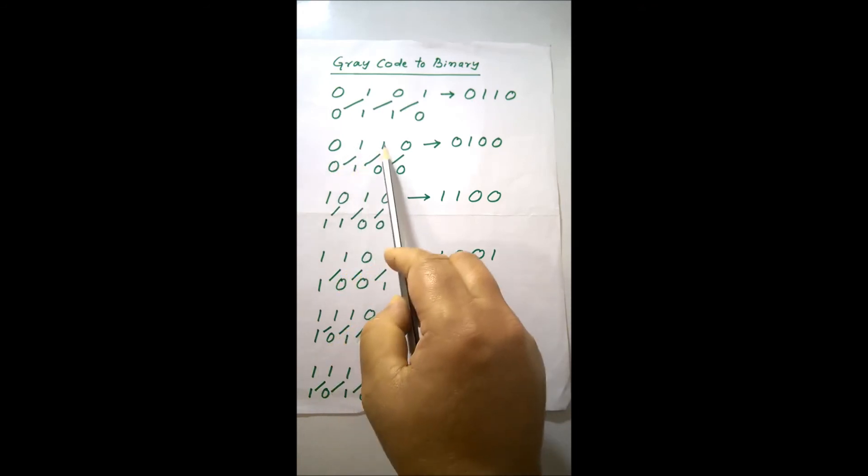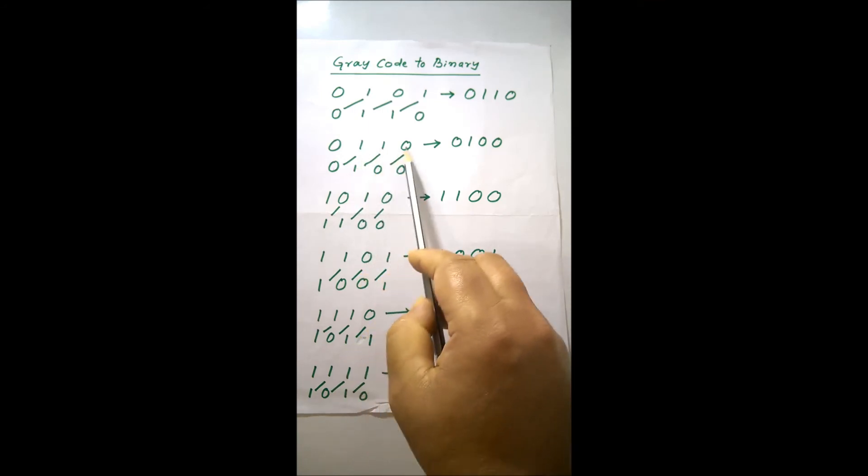Then this 1 will be XORed. I am showing you the straight line. That will be 0. Then 0 will be XORed with this. It is 0. Therefore,